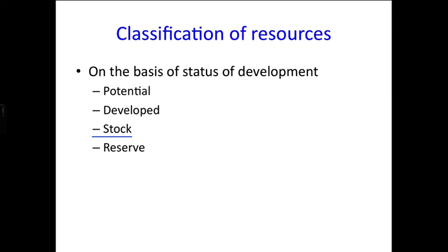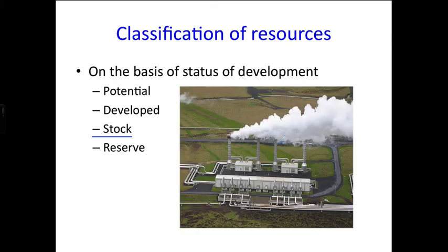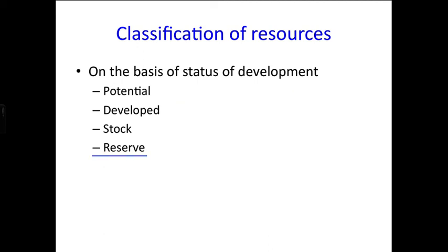The next classification is stock — materials in the environment which have the potential to satisfy human needs, but human beings do not yet have the appropriate technology to access them. For example, geothermal energy and hydrogen fuel fall under this category.